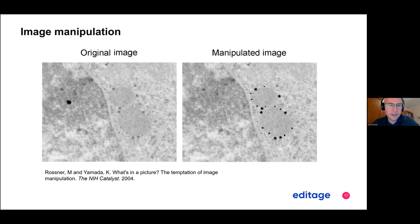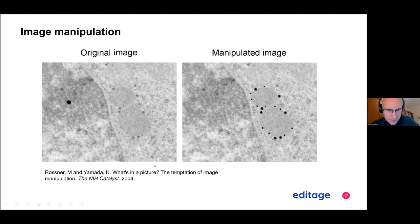Here's an example of image manipulation. They played with the contrast — you can see on the left side the contrast is not that high, then they deleted that circle, it's like a vacuole. On the right side is a manipulated image where they manipulated the contrast. This is from a journal that called out this image manipulation — 'What's in a picture? The temptation of image manipulation.' This is actually one of the most common reasons for a retraction of a paper.